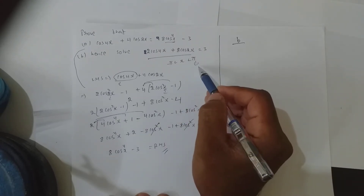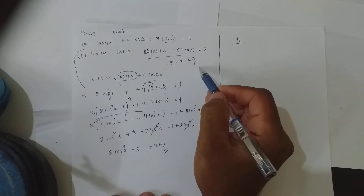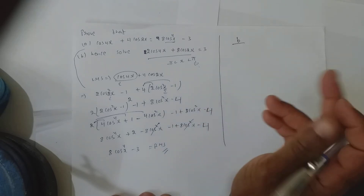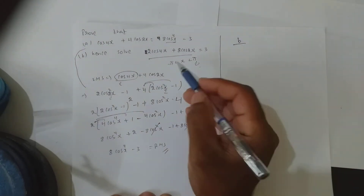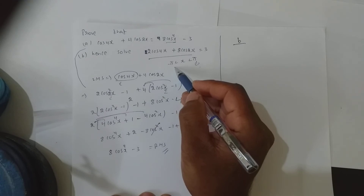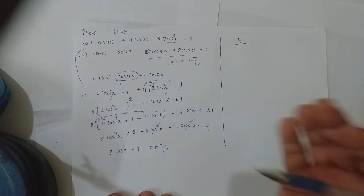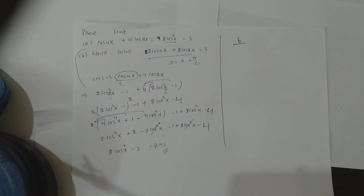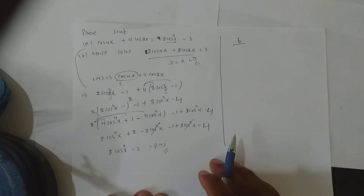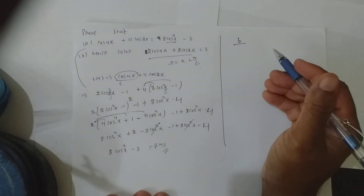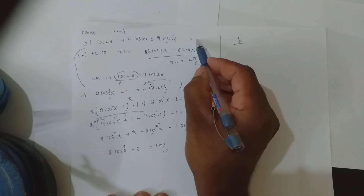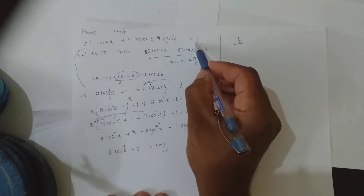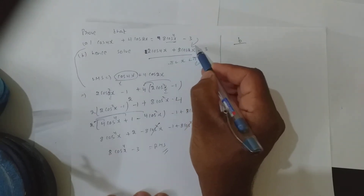First, it is given in terms of π, so your answer should be in radians. Second, negative values for x are allowed, so in the solution set you should get even negative values. For this kind of sum, the first part result must and should be used in the second part.